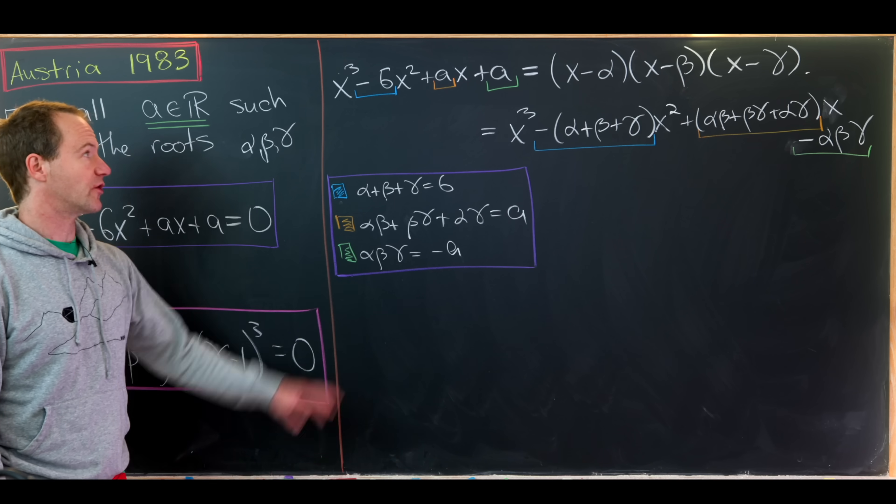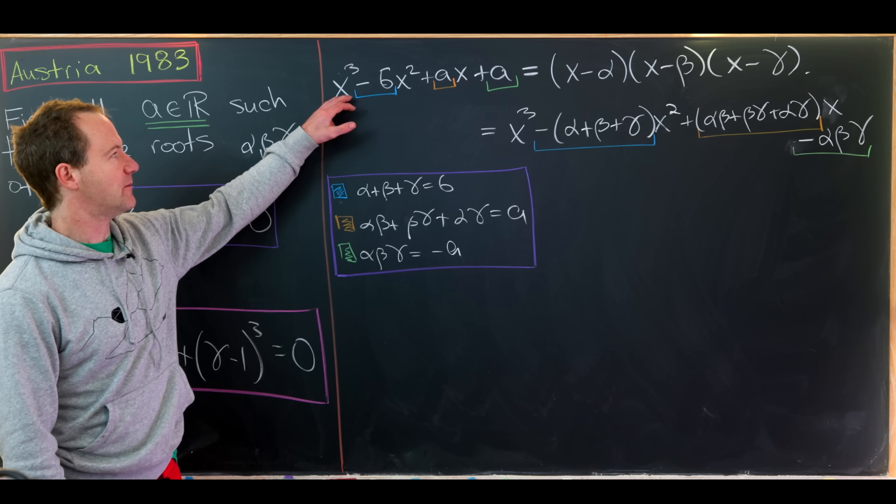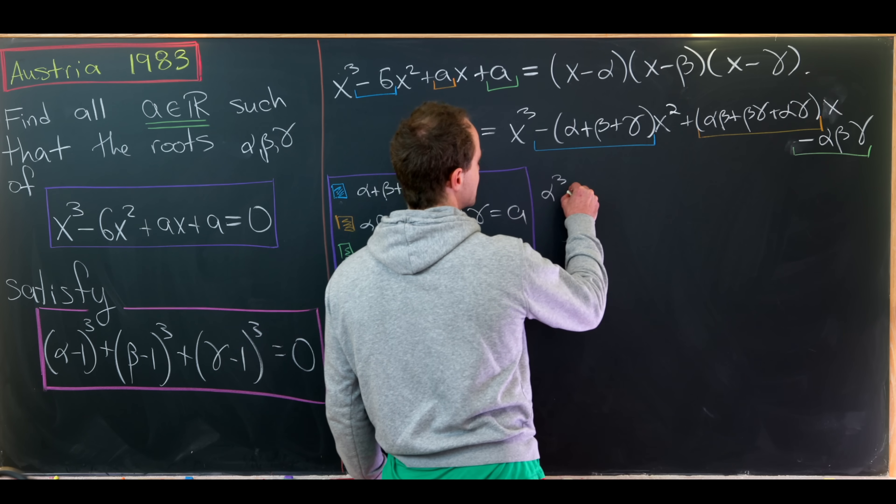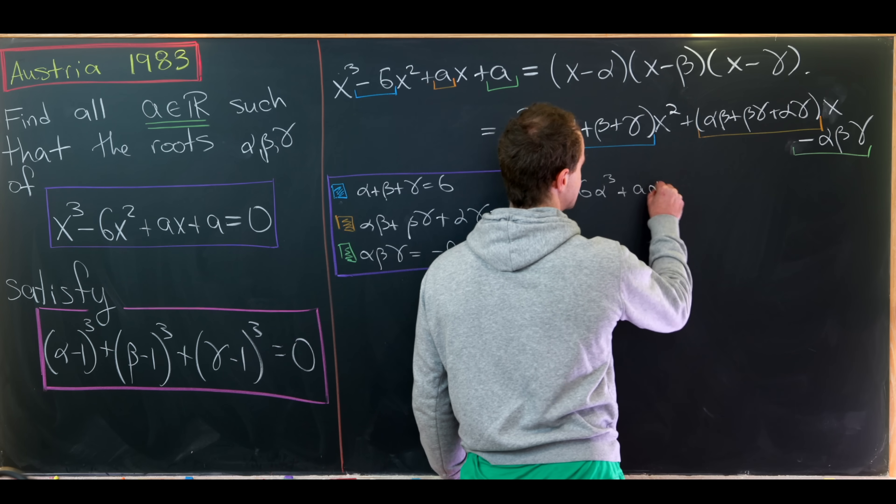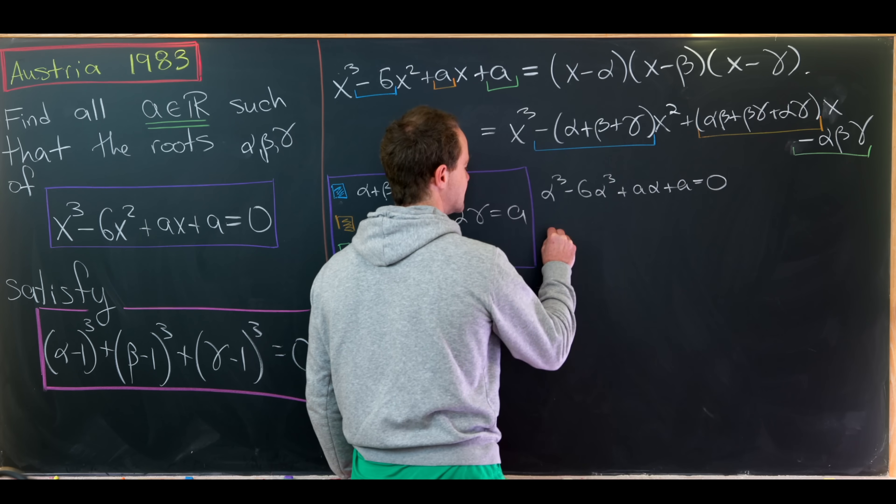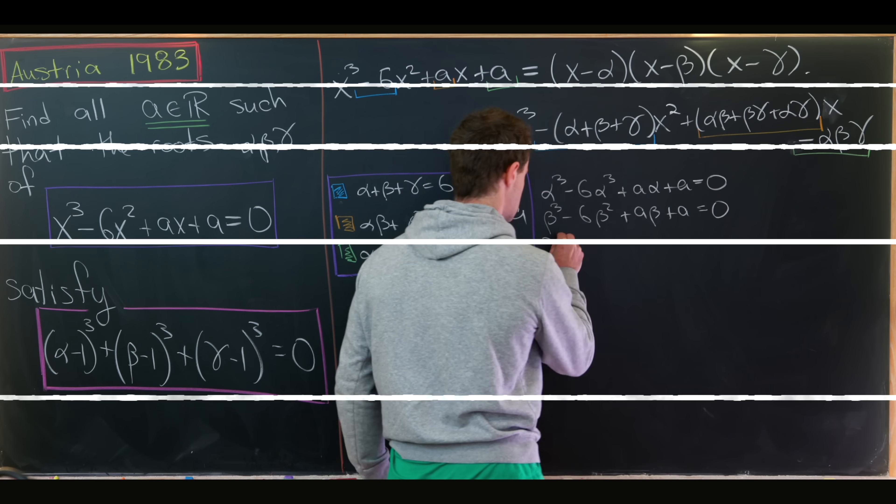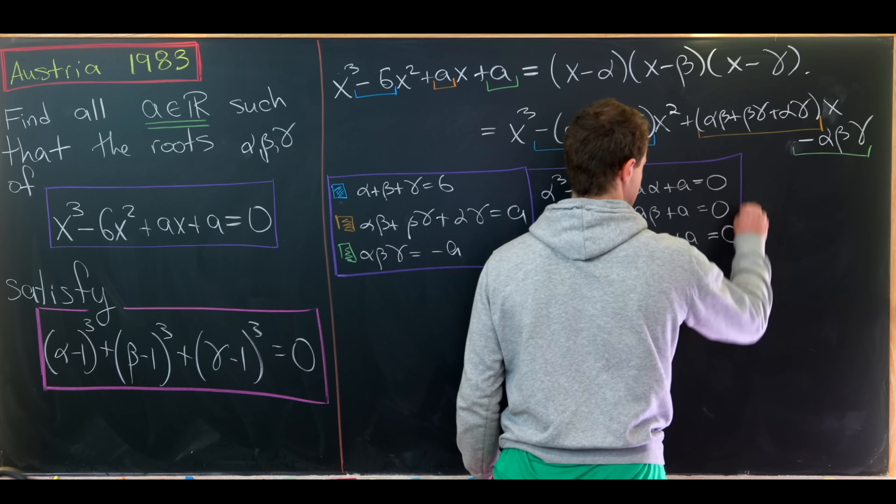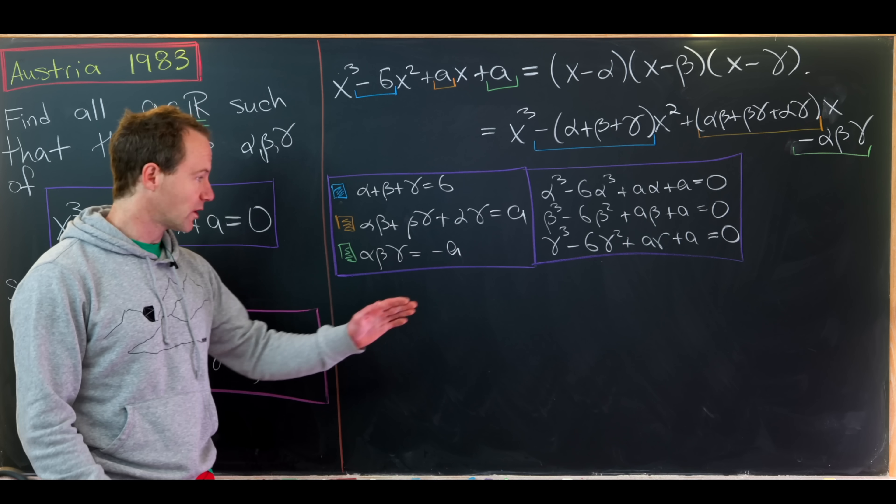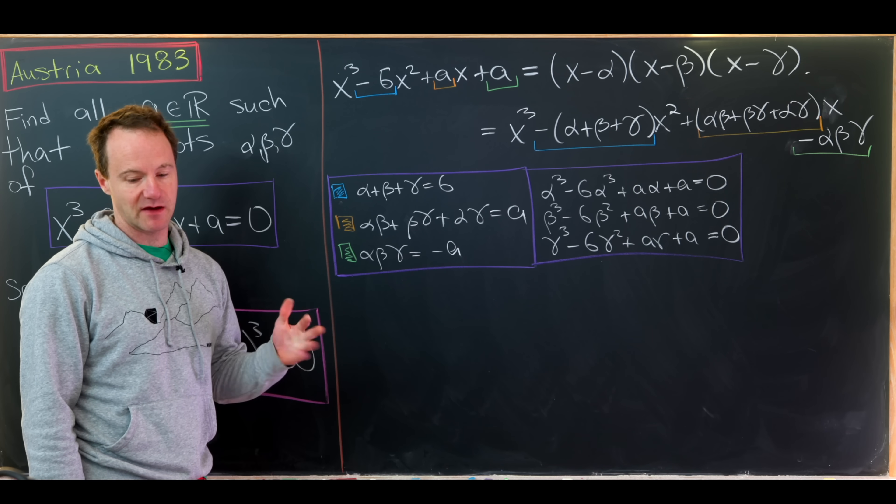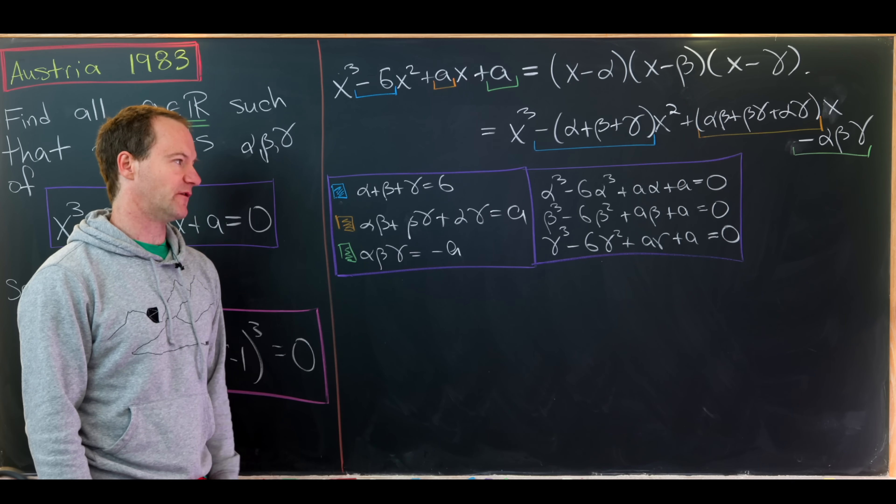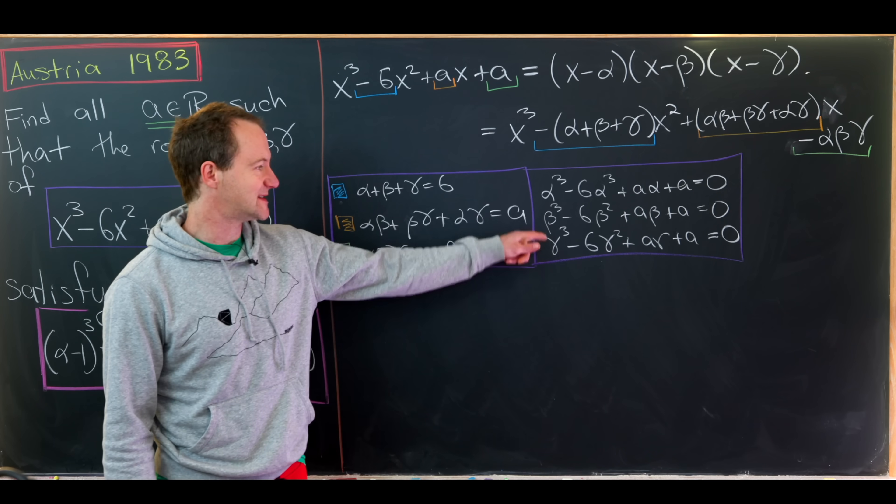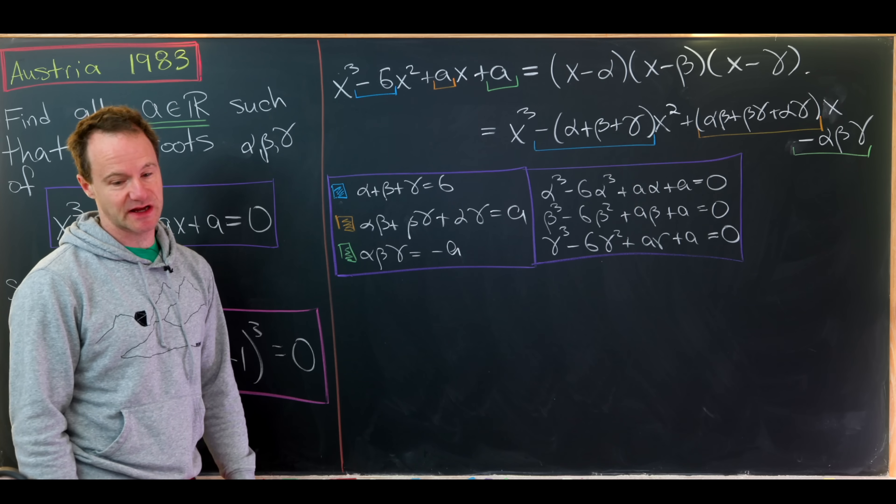That means if you plug alpha, beta, gamma into this polynomial, we should get zero. So let's write that down. We'll have alpha cubed minus 6 times alpha squared plus a times alpha plus a equals zero, and then similarly for beta and gamma. So that's looking nice. We've got three more equations, which is more than enough where we could get numerical values for a, alpha, and gamma. Although all we'll really need is a numerical value for a. So looking at this first set of equations, we see that they're symmetric in alpha, beta, and gamma, whereas the second set of equations is not symmetric in alpha, beta, and gamma.